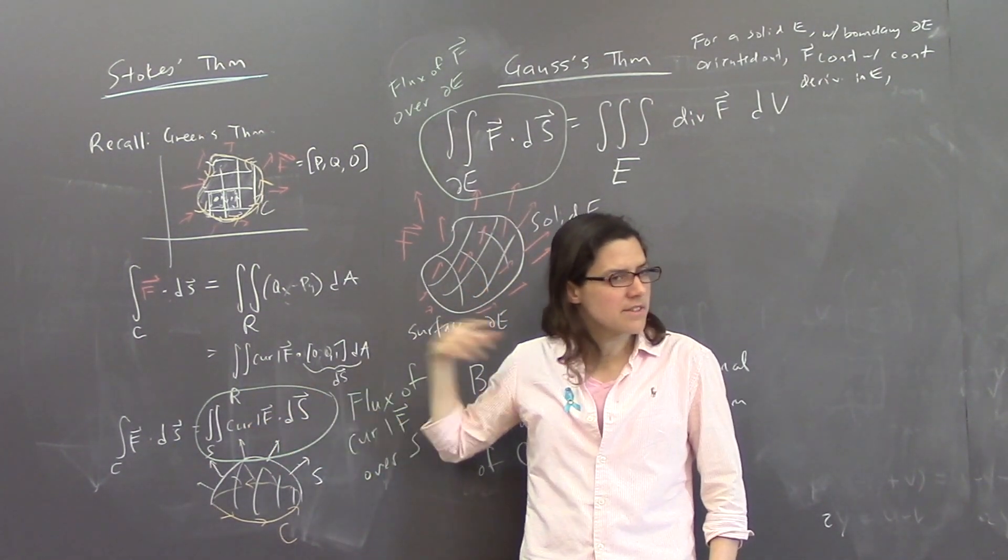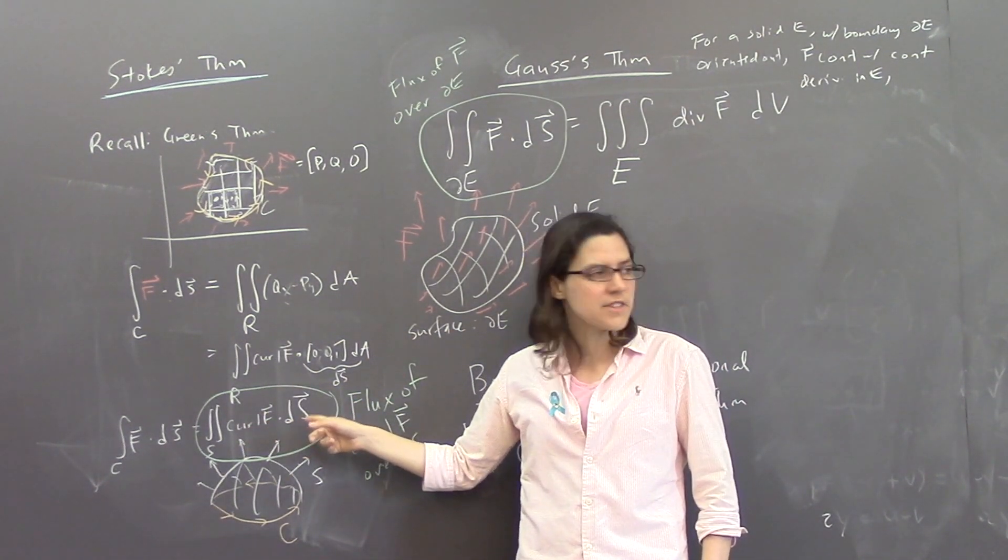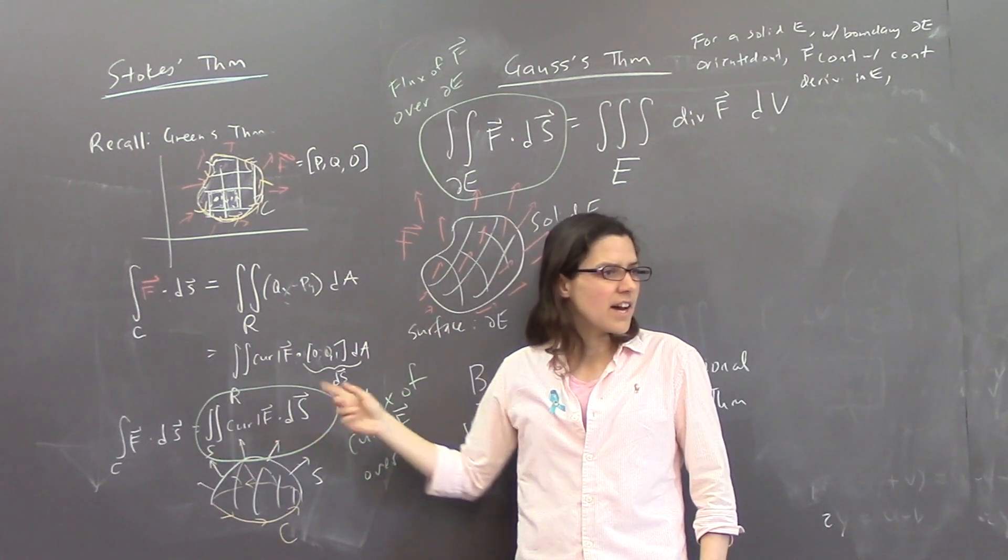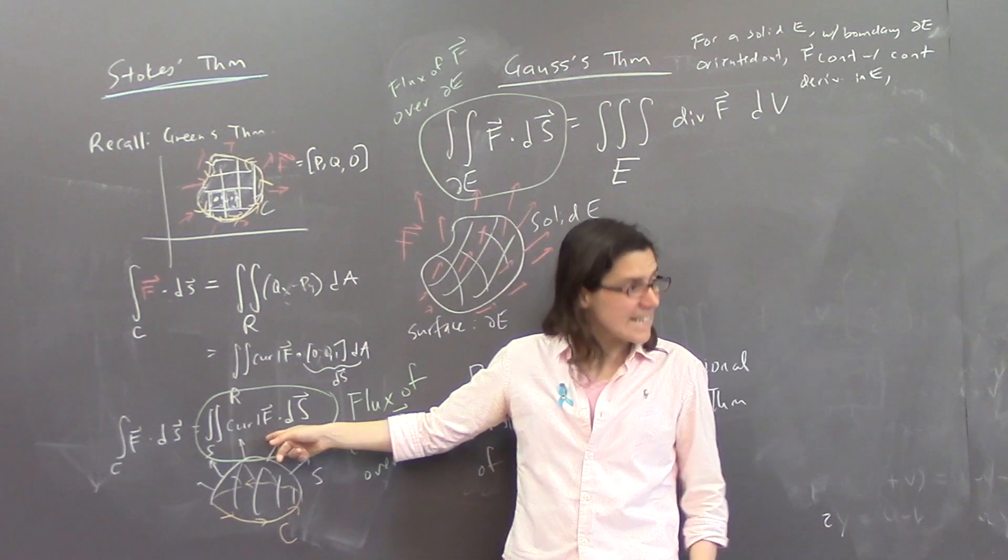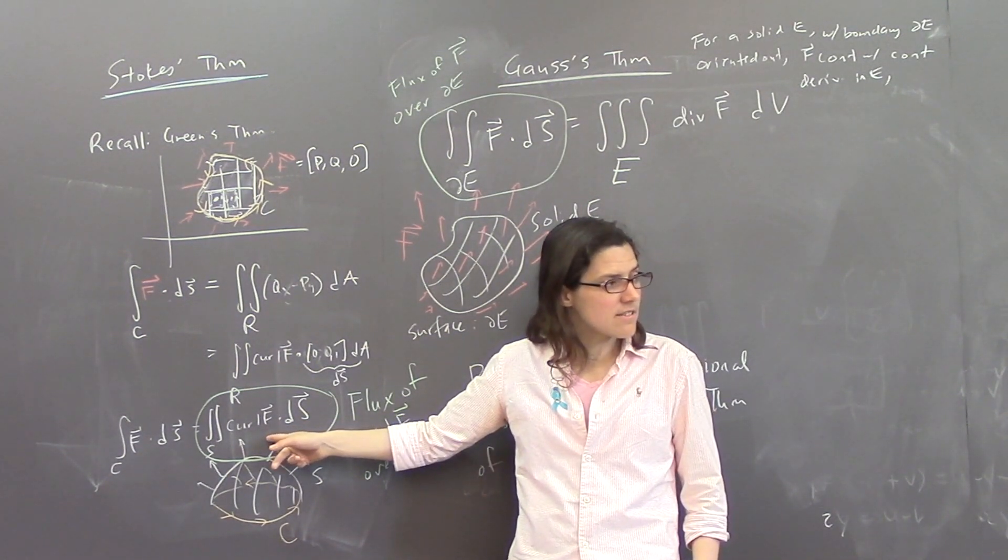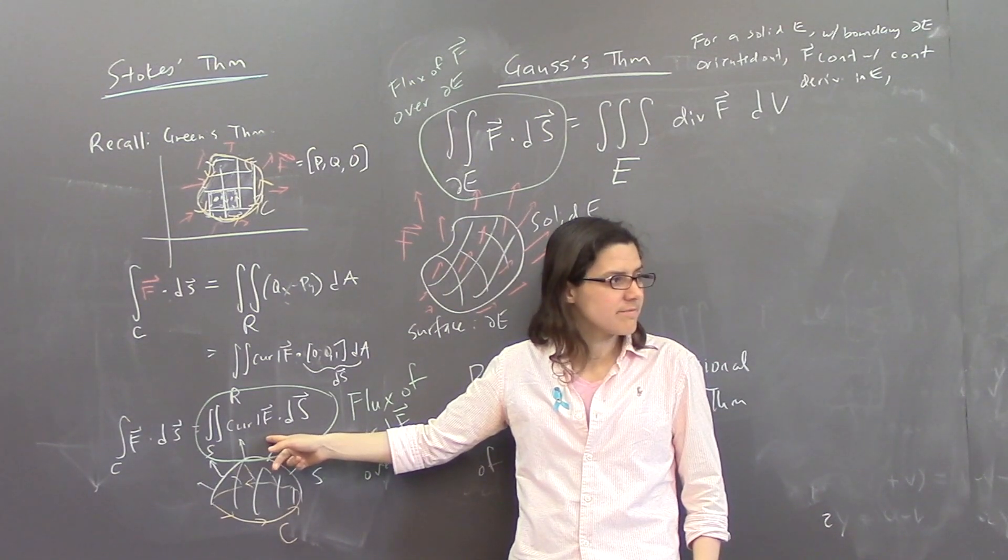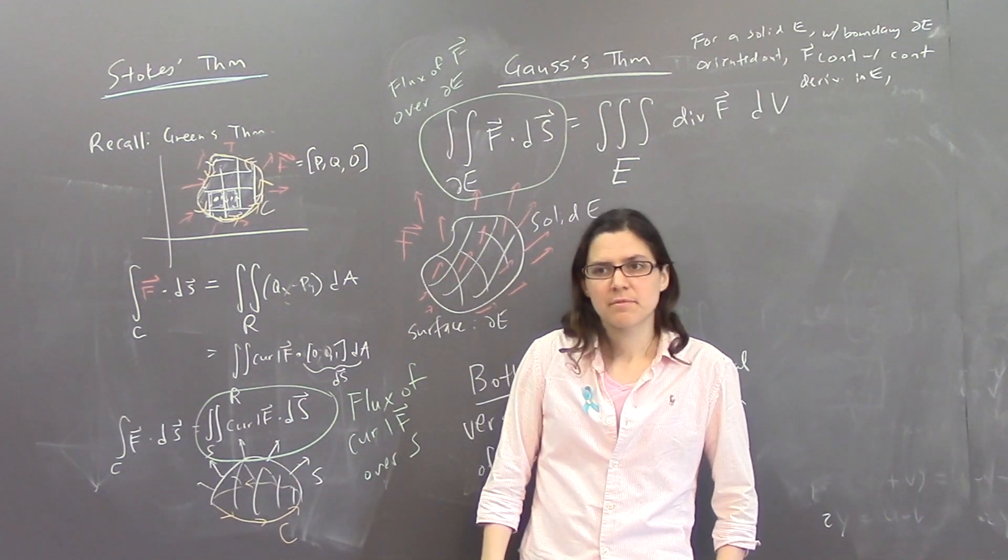So, if you were given some vector field F, and you wanted to apply Stokes theorem to, like, take it off of the surface and put it onto the boundary, you'd have to find the vector field F, whose curl your vector field is, sort of like an anti-derivative. And that sounds challenging.